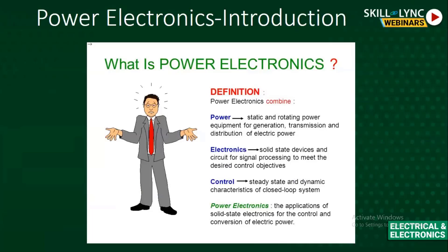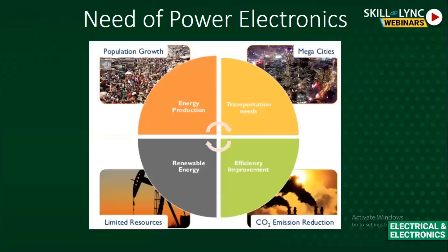Each word has a specific meaning. Power refers to static and rotating power — the generation of electric power. Electronics is signal and circuit processing to meet desired control objectives. Control is basically the steady-state and dynamic characteristics of a closed-loop system. Power electronics is the combination of all these: it is solid-state electronics for the control and conversion of electric power.